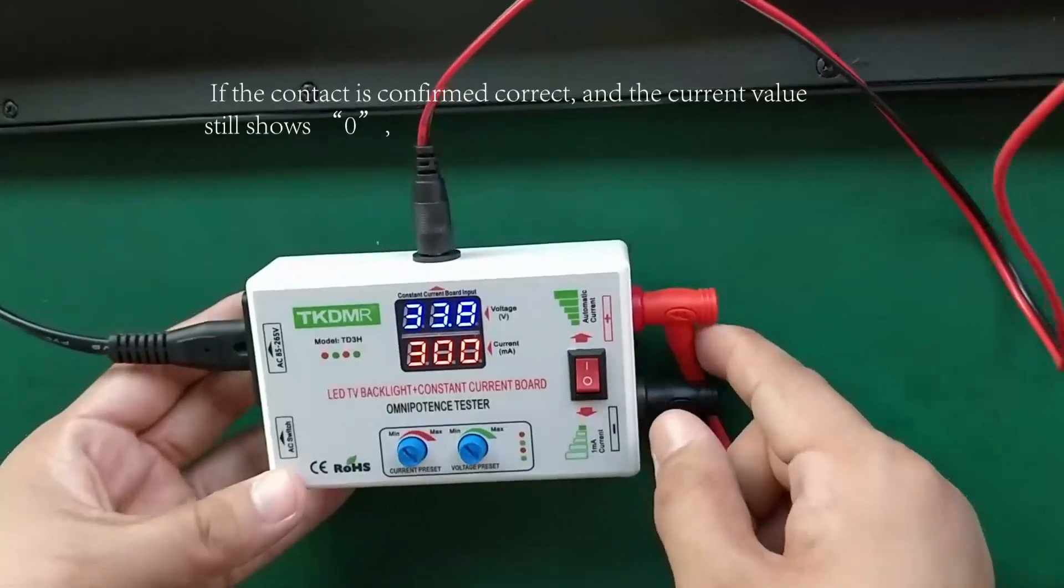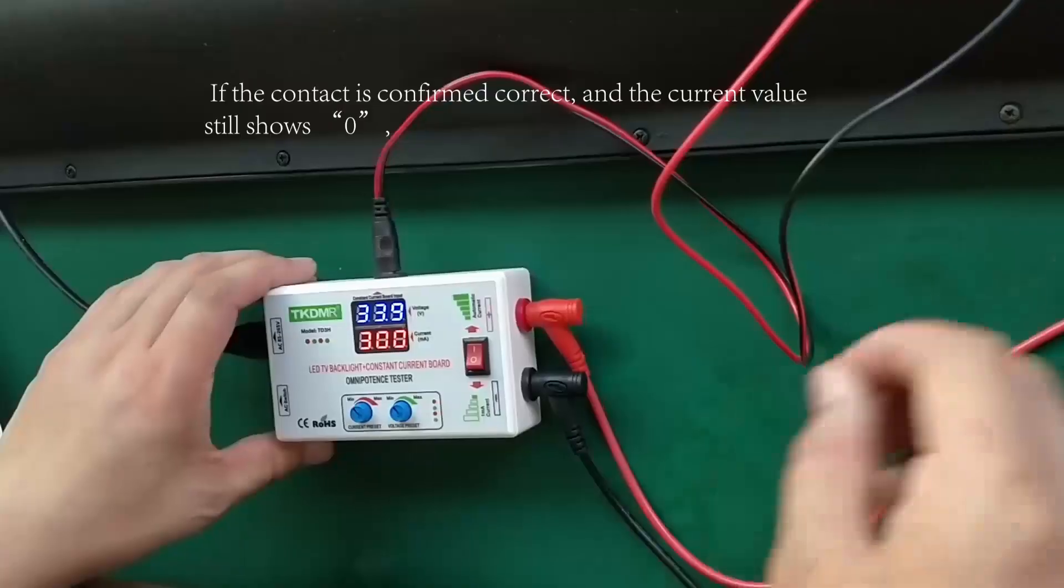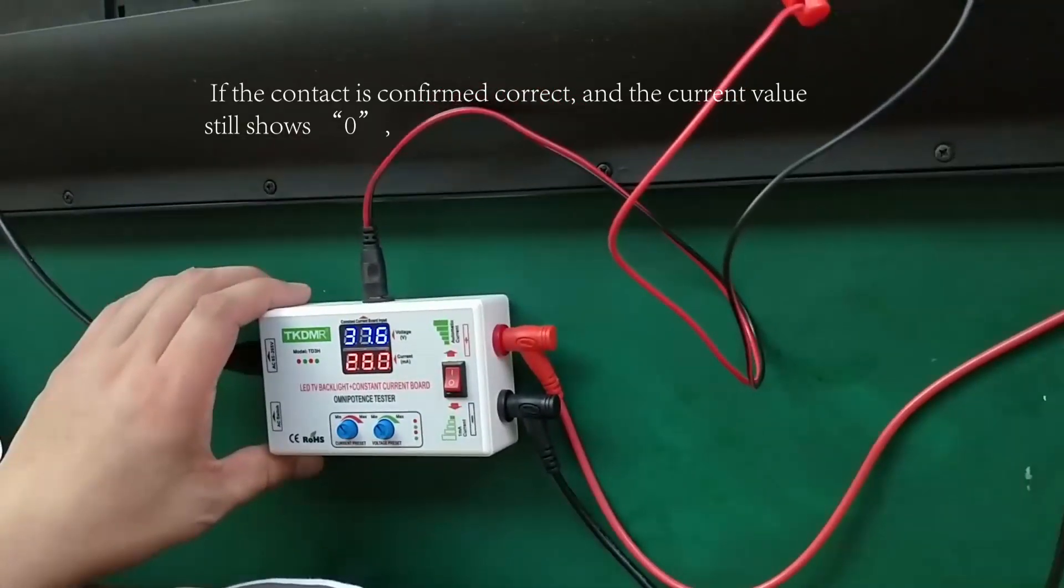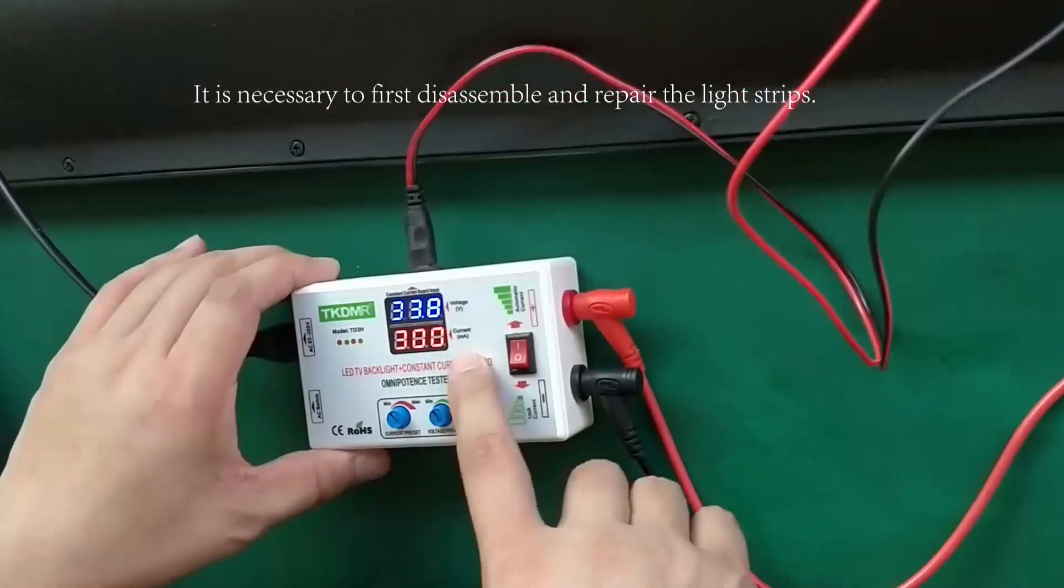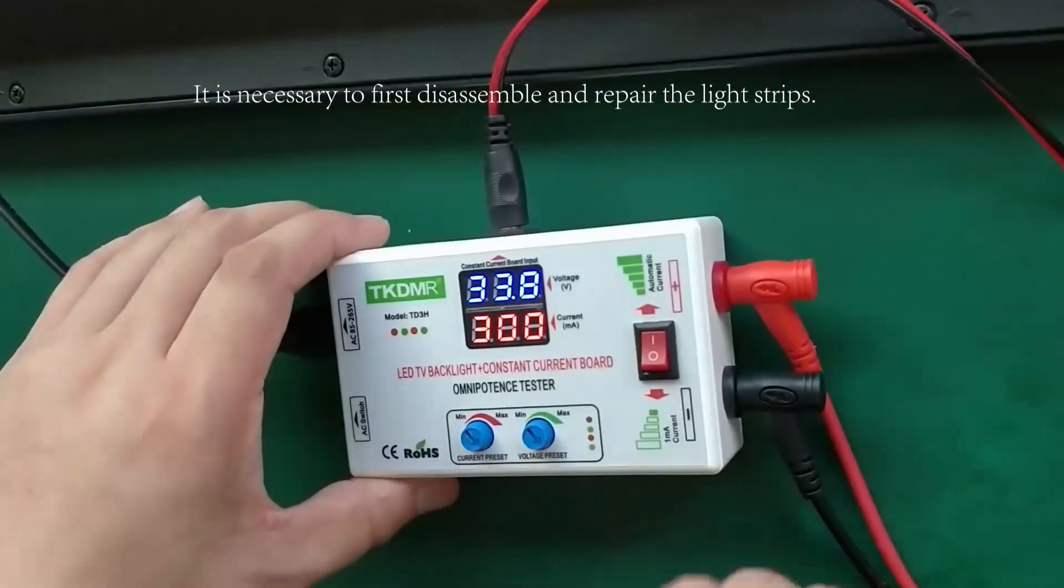If the contact is confirmed correct and the current value still shows zero, it indicates that light strip is at fault. It is necessary to first disassemble and repair the light strips.